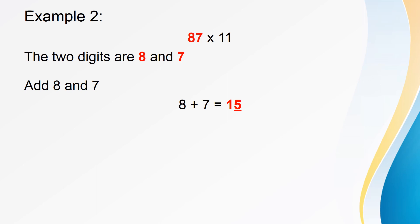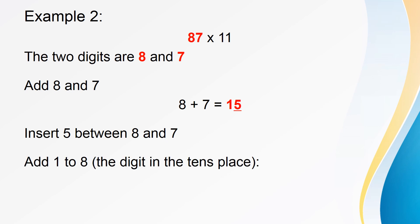Now, in this case, insert 5, that is the digit in the tens place of the sum, between 8 and 7. Then, add 1 to 8, that is the digit in the tens place of the number. The sum of 1 and 8 is 9. So, 87 into 11 is equal to 957.